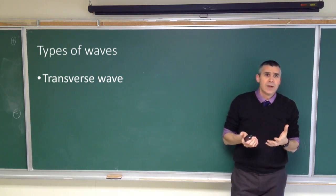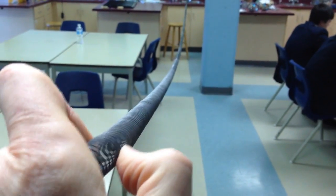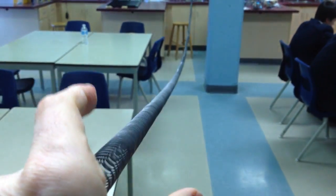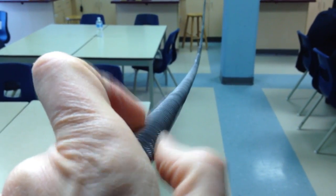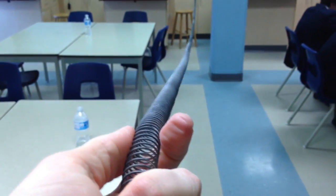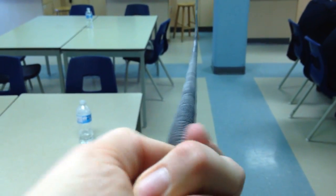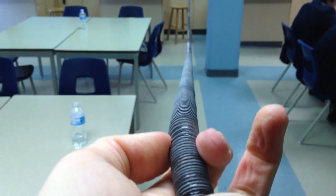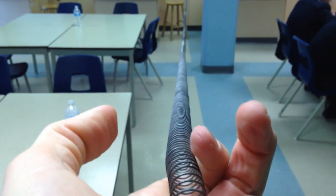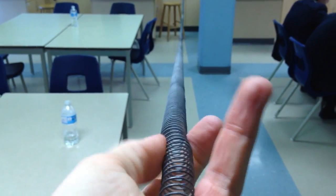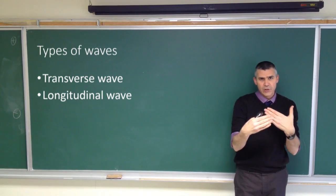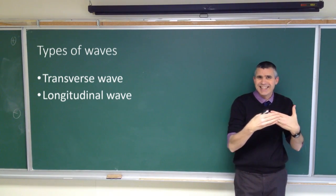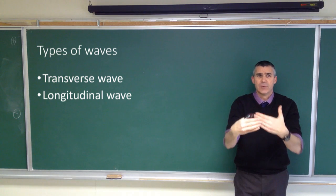Next thing we can do is squeeze part of the spring together and let that go. When we let that go, we get a little pulse of compression traveling down the length of the spring, and that's called a longitudinal wave, because the direction of displacement is in the same direction as the direction of motion.